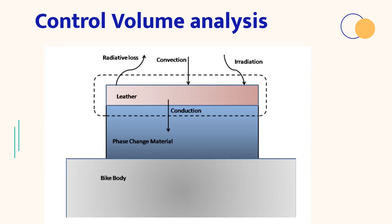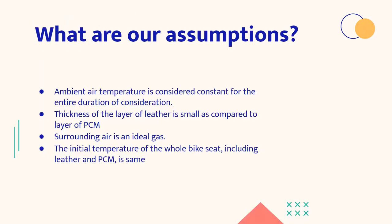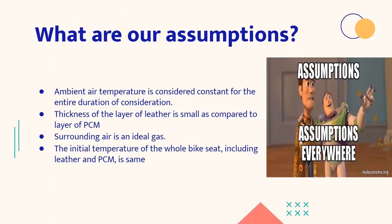Now as the temperature of leather is high, convection would occur from the air to the leather as the ambient temperature of air is higher. And as the leather has high emissivity and is black in color, it would also cause radiative losses. So that was all about our mode of heat transfer and the control volume analysis.